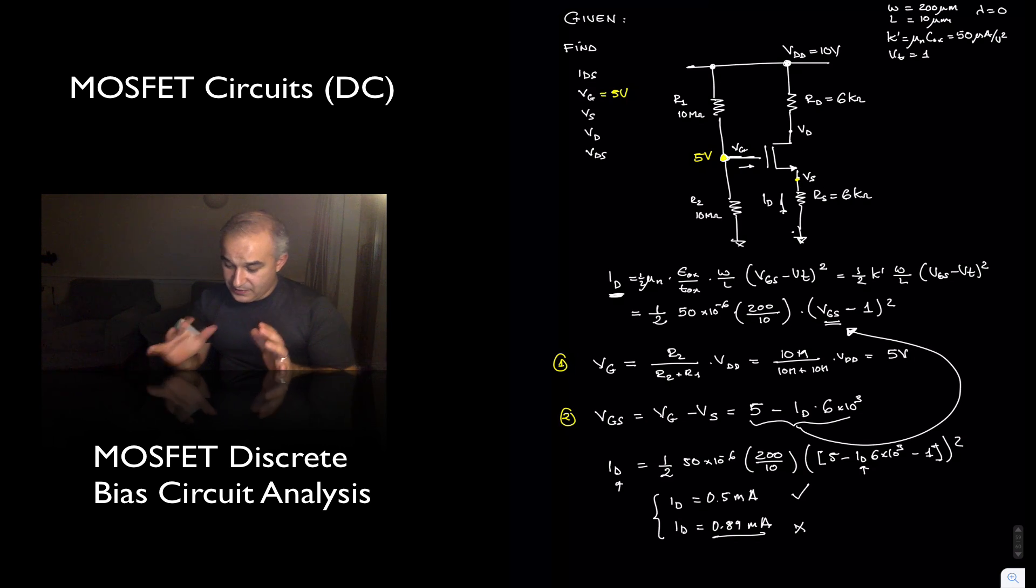So once again, because we have a quadratic relationship, we always get two solutions. One of them, when you use it, it gives you a value at the source that is not possible. In this case, it gives us a value at the source where the source voltage is higher than the gate voltage. So you discard that.